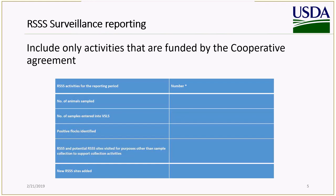For RSS surveillance reporting, in the cooperative agreement guidebook there are suggested reporting formats. There are two suggested reporting formats: one for RSS surveillance reporting and another for non-RSS surveillance reporting — RSS being Regulatory Scrapie Slaughter Surveillance, which includes collections at slaughter. Briefly, we want to know the number of animals sampled, the number of samples entered into the VSLS submission system, the number of positive flocks identified through RSS surveillance, the RSS sites and potential RSS sites visited for reasons other than collecting samples, and the number of new RSS sites added.